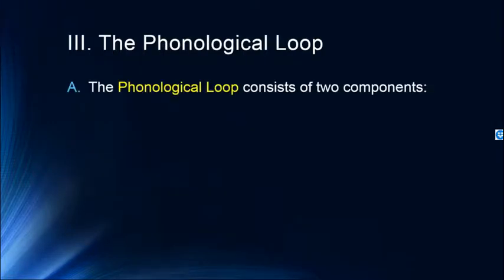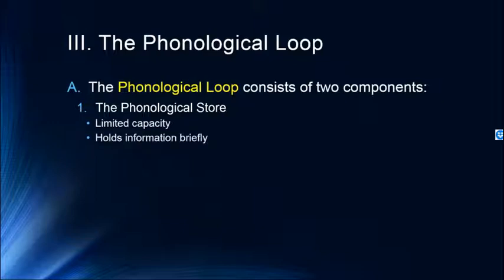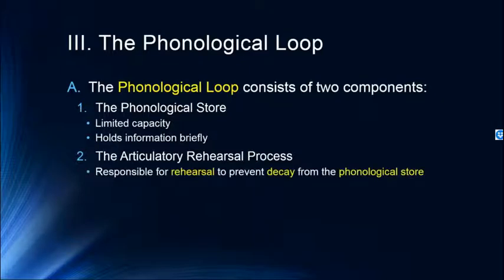The phonological loop consists of two components. The phonological store, which has limited capacity, holds information briefly. The research we covered in the short-term memory lecture — all about capacity and duration of short-term memory — really encapsulates what we know about the phonological store to a great extent. This also gets us to the articulatory rehearsal process, which is responsible for rehearsal to prevent decay from the phonological store, holding both verbal and auditory information.